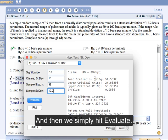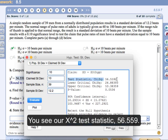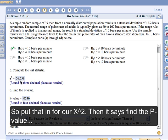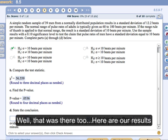And you see our chi-squared test statistic, 56.559. So that's, put that in there for our chi-squared.